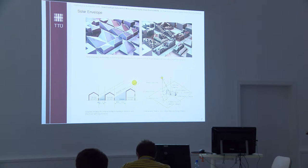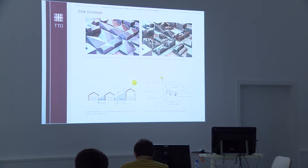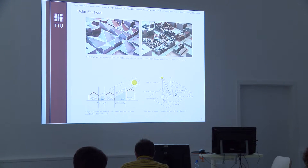That means it is possible to calculate the maximum buildable volume in the middle of a specific plot in a way that, for a specific period and time duration, it does not cast shadow on the surrounding buildings. It is quite intuitive that solar envelopes can be calculated on paper using the solar azimuth and sun altitude — the two angles — but it is a quite tedious and long process, and can be quite complex in urban contexts.